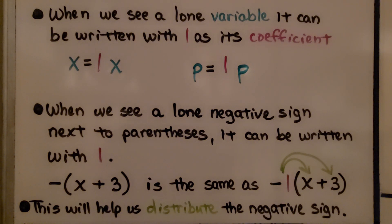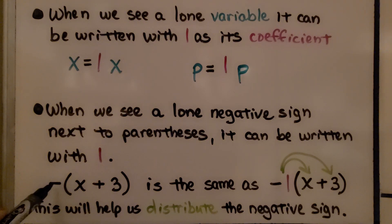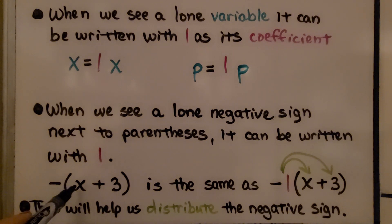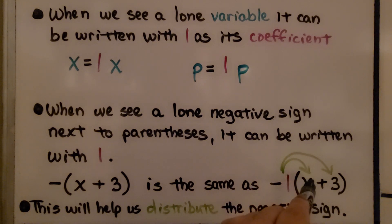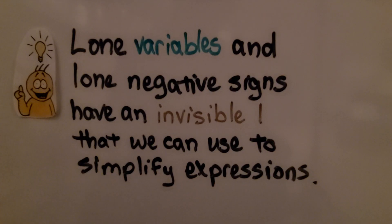When we see a lone negative sign next to parentheses, it can be written with a 1. If we see negative and then x plus 3 in parentheses, it's the same as negative 1 multiplied by x plus 3. We can distribute this negative 1 to the x plus the 3, which will help us distribute the negative sign.